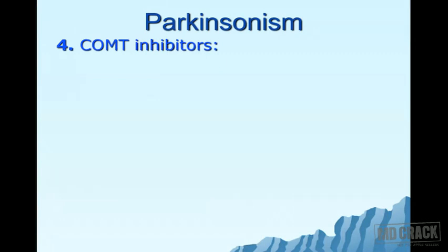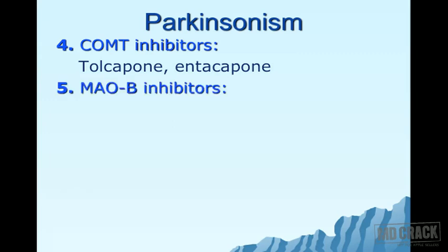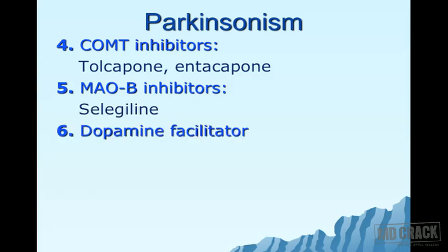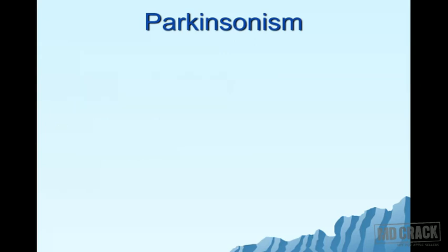Next are COMT inhibitors — catechol-O-methyltransferase inhibitors. COMT breaks down levodopa in the periphery; inhibitors include tolcapone and entacapone. Following that are MAO-B inhibitors — monoamine oxidase B inhibitors — specifically selegiline, which inhibit the breakdown of dopamine.